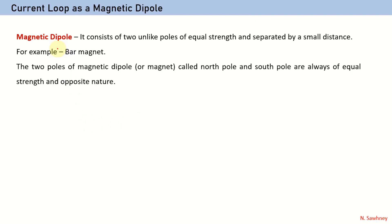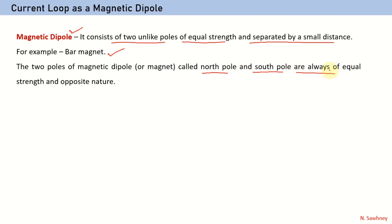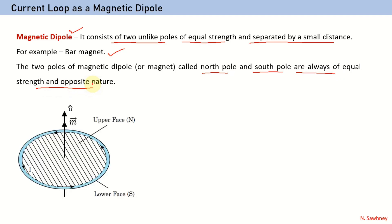Before going into detail, we should be aware of what a magnetic dipole is. As we have studied in electrostatics, an electric dipole is a pair of opposite charges placed at a small distance apart. Similarly, a magnetic dipole consists of two unlike poles of equal strength separated by a small distance, like in a bar magnet. These two poles — north and south — are always of equal strength and opposite nature.